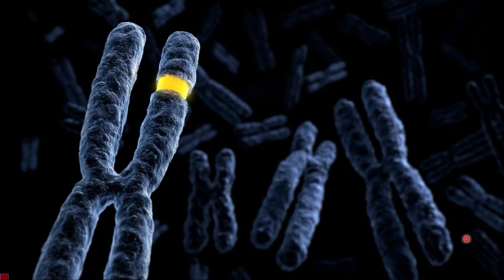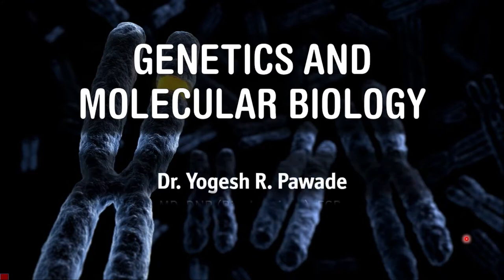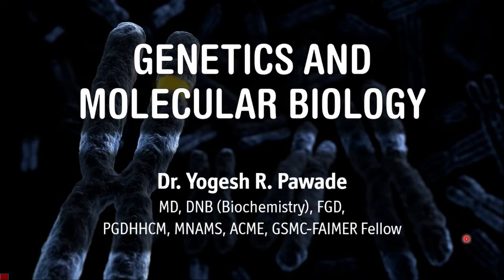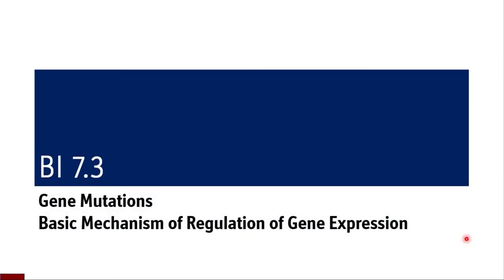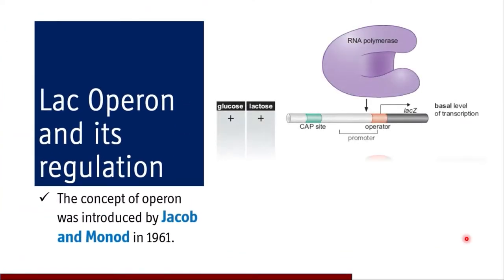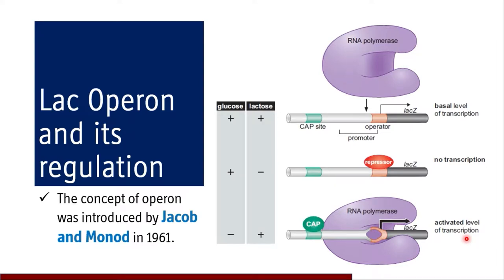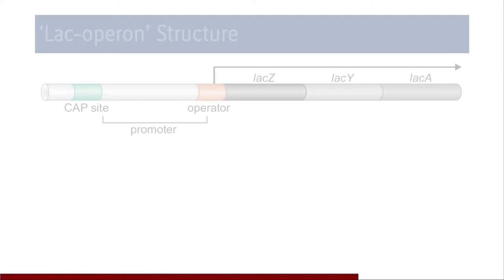Hello everyone. After discussing various genetic mutations and going through our various mechanisms of regulation of gene expression, we are now switching on to the next and last topic under this competency BI-7.3, that is lac operon. I'm Dr. Yogesh. I welcome you to this session in genetics and molecular biology lecture series. The concept of lactose operon in E. coli was introduced by Jacob and Monod in 1961.